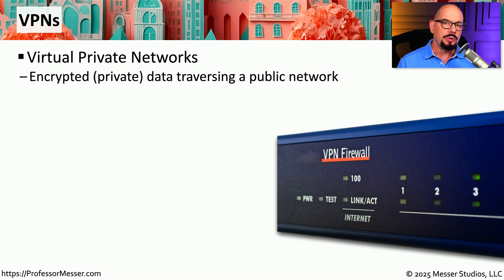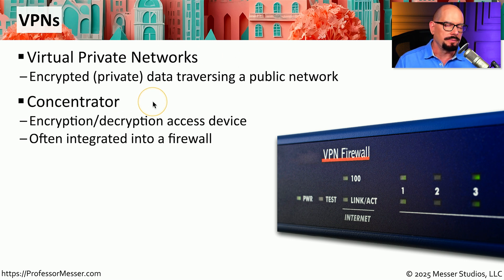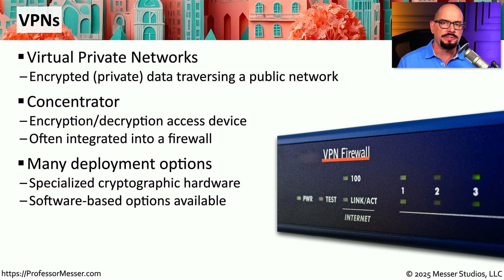If you have a mobile device or a laptop and you need to connect back to your corporate office across the internet, then you're probably very familiar with a VPN — a virtual private network. It encrypts all of the data going back and forth between you and the other device, even if you're going across a public network like the internet. From your device, you're connecting to a VPN concentrator, a centralized device usually at your place of business. Everyone who needs access to your company is going to use the VPN client on their computer to connect to the VPN concentrator. You may find a single appliance or server configured as a VPN concentrator, but these days you often find VPN concentrators built into next-generation firewalls.